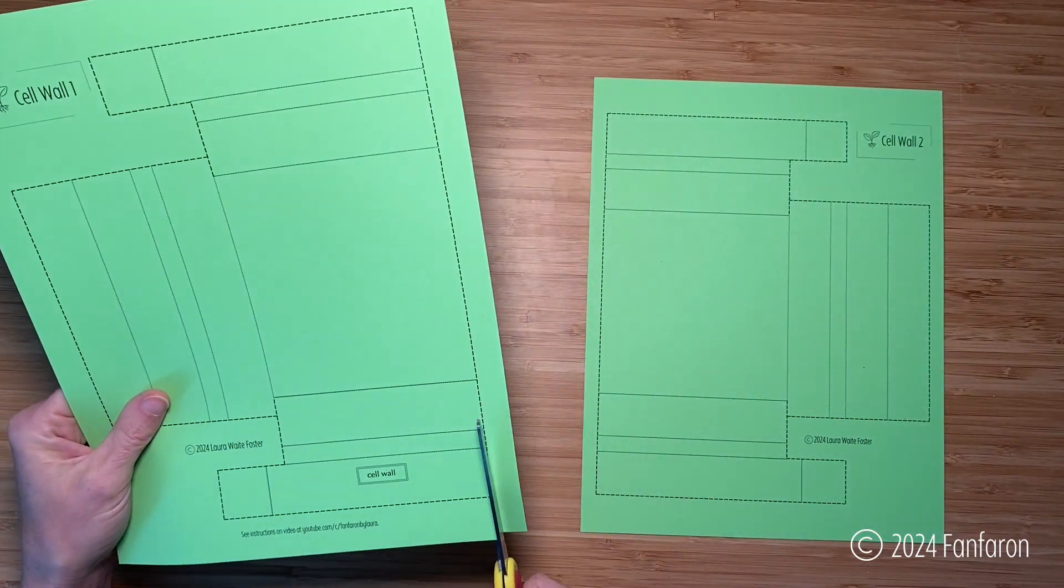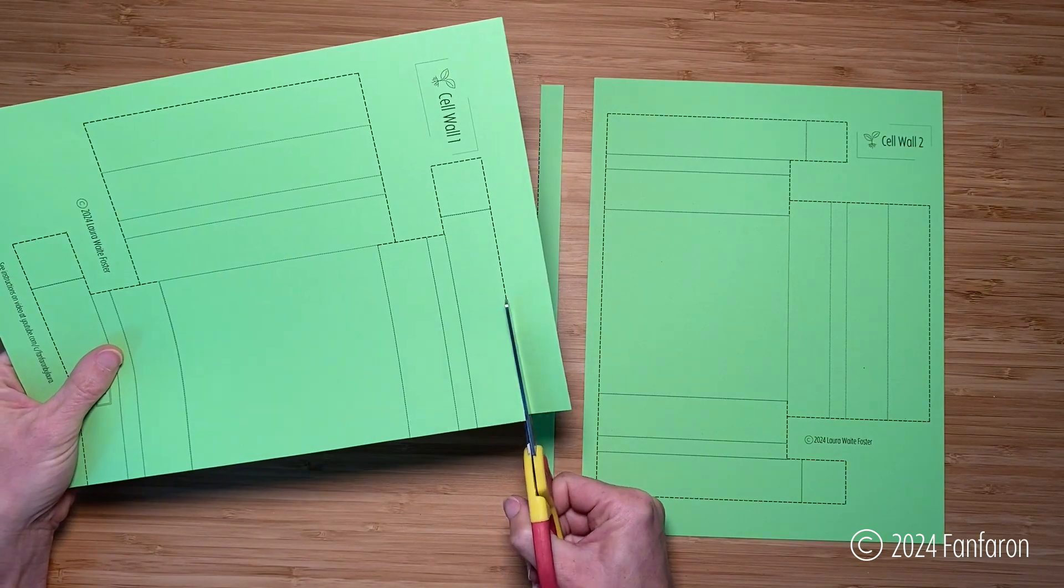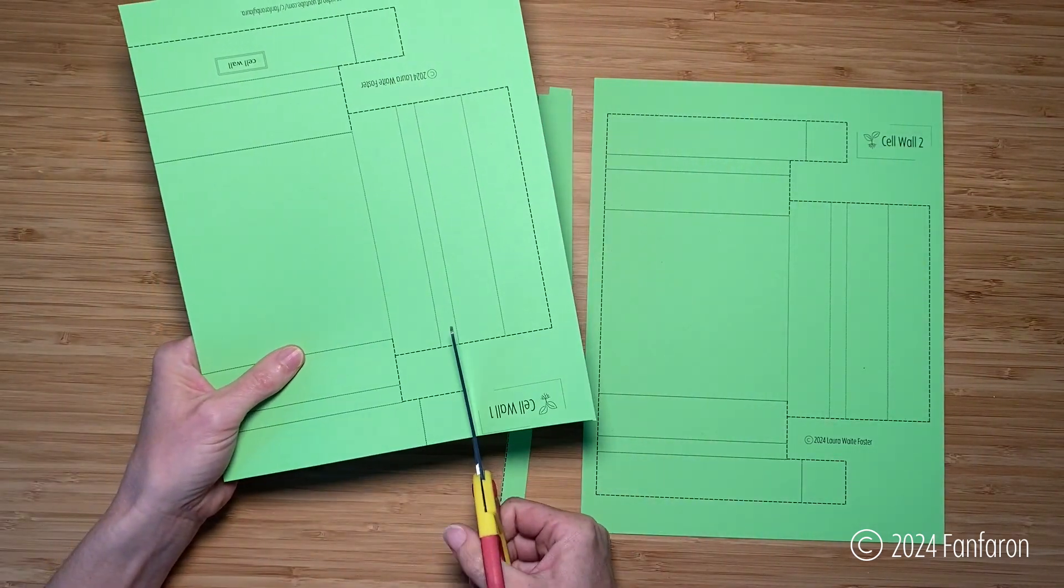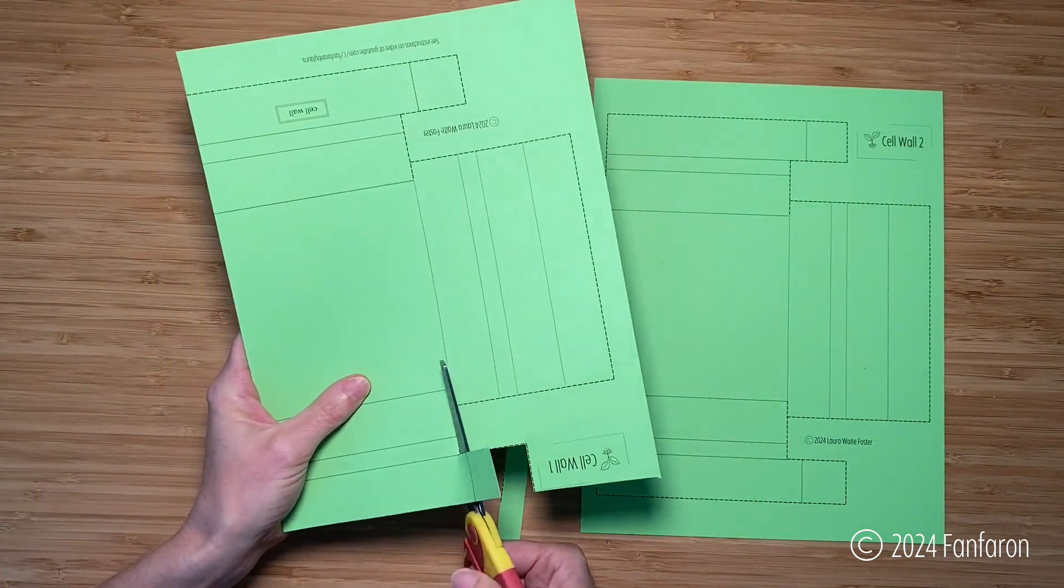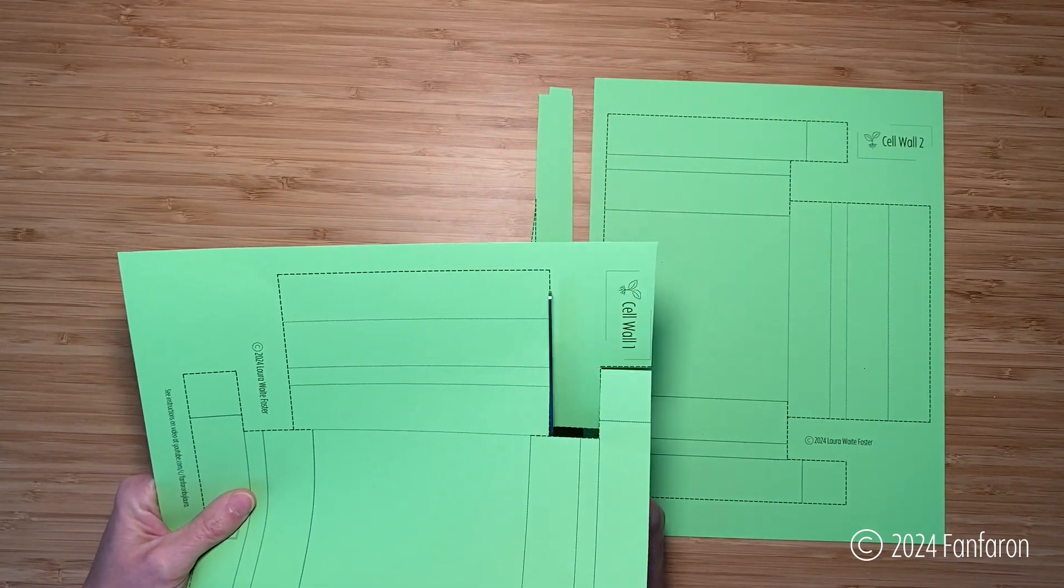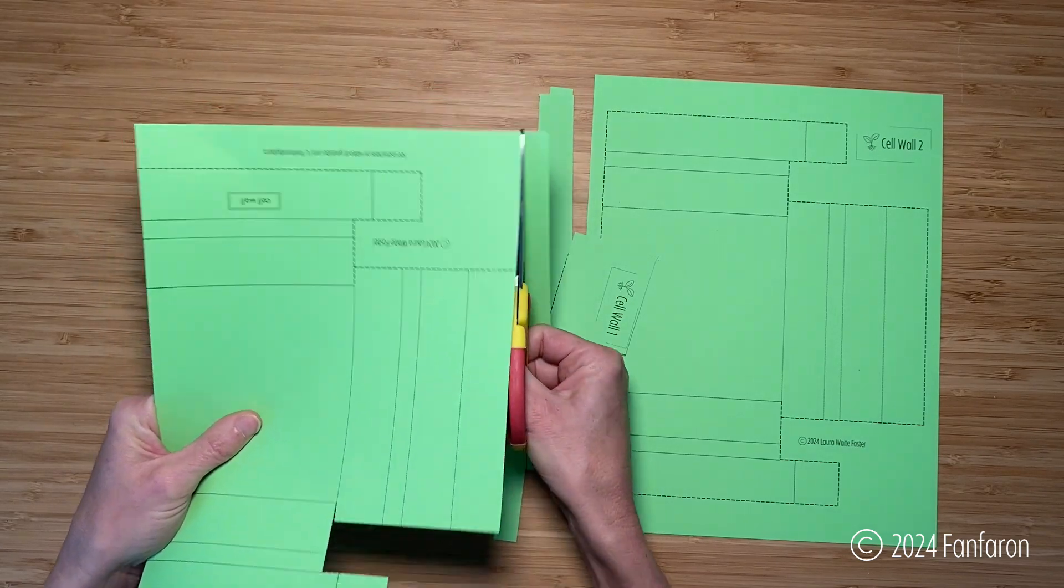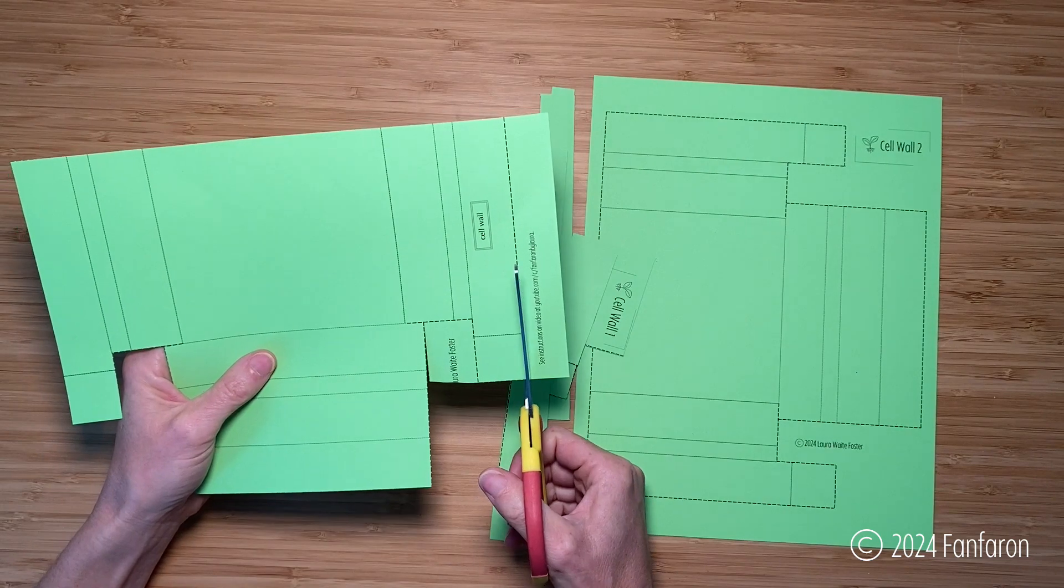Let's first create the cell wall. A rigid cell wall is unique to plant cells. Animal cells don't have one. Cut on the black dashed line and be sure to cut this little slit right here on both sides. I chose to use green cardstock for the cell wall. You can use paper as well and green's not necessary. It just evoked the idea of a plant for me.